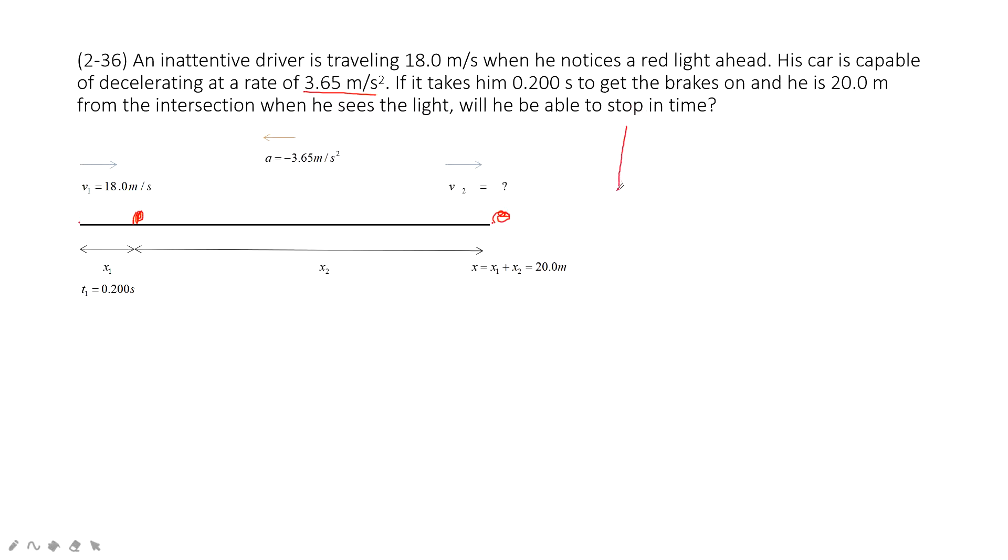If we draw a v-t graph, it should be this part, right? At the beginning, at t1, it is constant velocity.